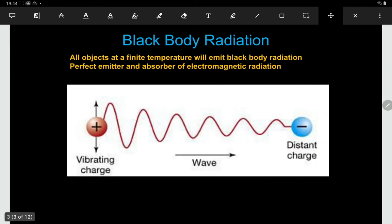So why are these objects emitting this light? Well it turns out that all objects, as long as you have some temperature, are emitting radiation and this radiation is called black body radiation. A black body is defined as something that's a perfect emitter and absorber of electromagnetic radiation. It will absorb all of the electromagnetic radiation that falls on it and it's also very good at emitting it right across the spectrum.